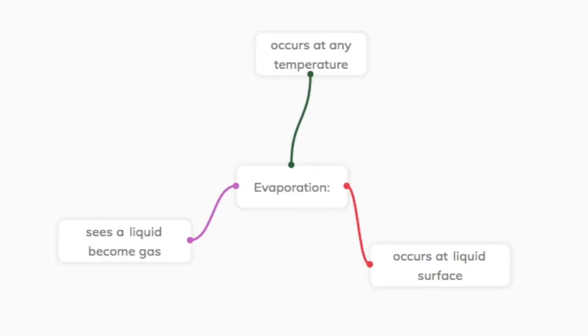The outcome of evaporation is that the particles left in the liquid now have a lower average energy, resulting in a reduction of the liquid's temperature.